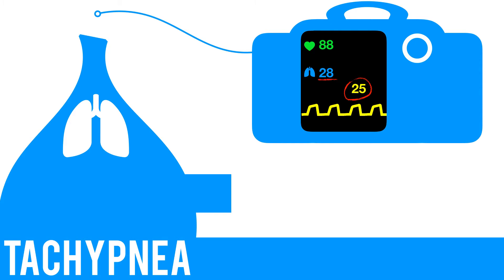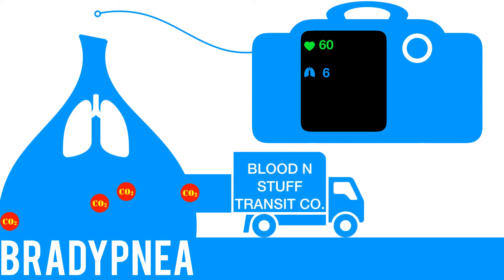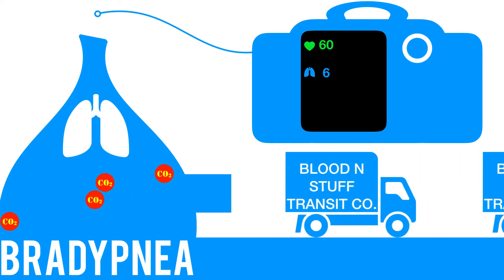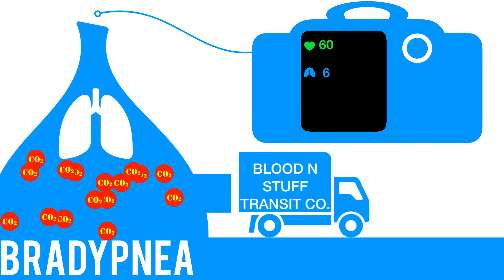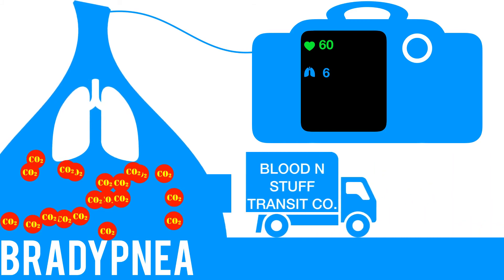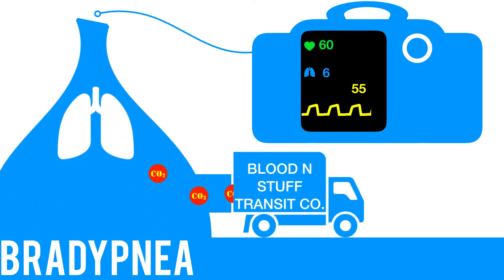Hyperventilation causes hypocarbia, which causes an electrolyte shift in the body and could manifest as carpal-pedal spasms. Conversely, a low ventilatory rate gives you a high capno number, because of all that time the blood has to drop loads of CO2 off in the lungs before it all gets exhaled. Our bradypneic rate of 6 will give us a high capno reading of 55. Bradypnea causes hypercarbia.